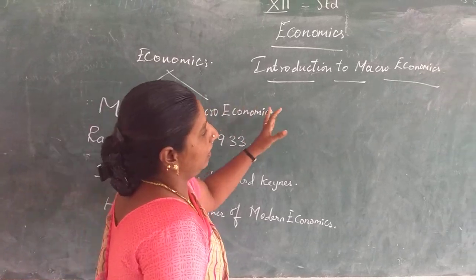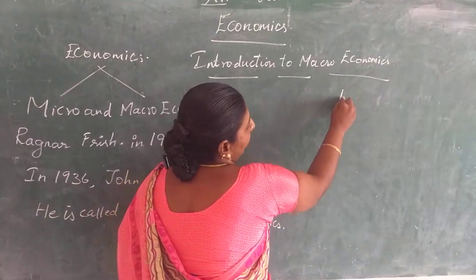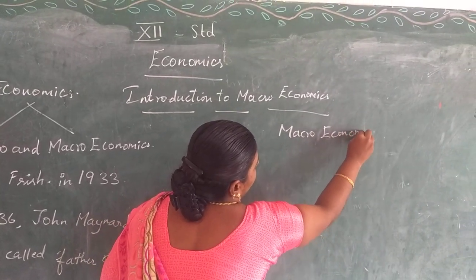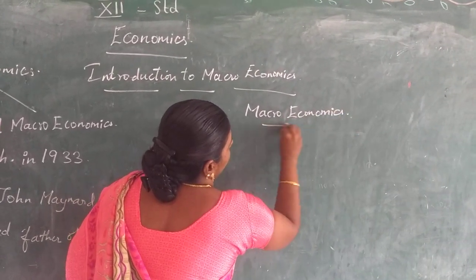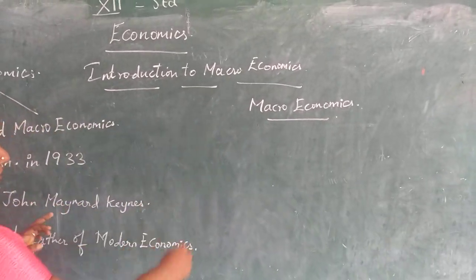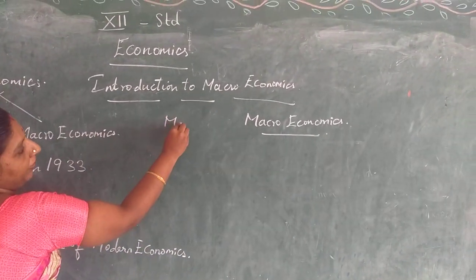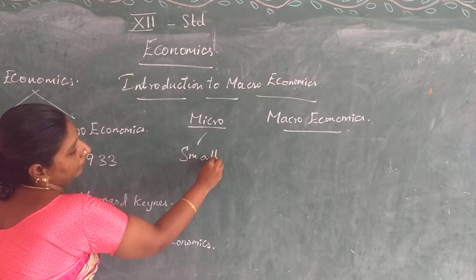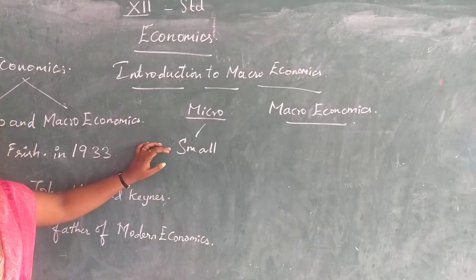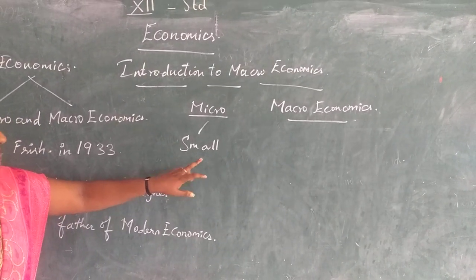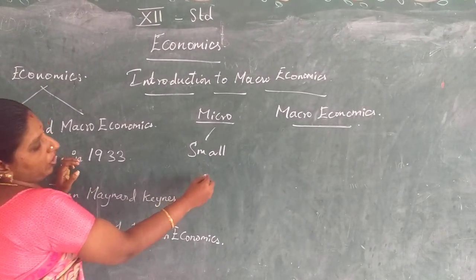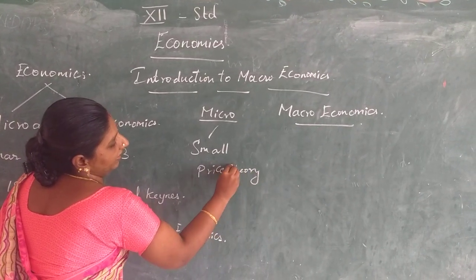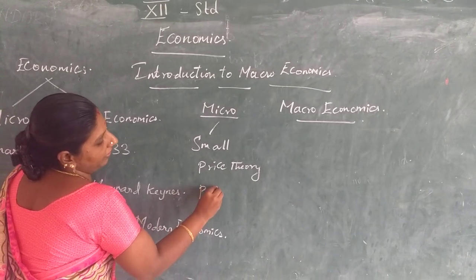Now we move on to today's topic: macroeconomics. Microeconomics studies about the individual, households, firms and industries, and it is called price theory — it studies a part of the economy.